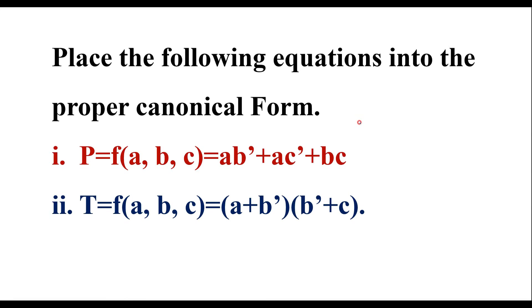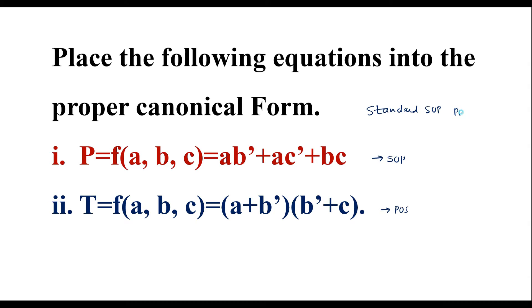In this video, I will consider one example on Boolean functions. Place the following equations into the proper canonical form. Here two functions are given. One is P, which consists of three variables A, B, C, and the function is AB̄ + AC̄ + BC. This is in SOP form, that is sum of product form. Another function is T, which is (A + B̄)(B̄ + C). This is in POS form, that is product of sum form. We are supposed to convert these two into proper canonical form, meaning standard SOP or standard POS.